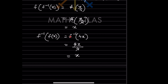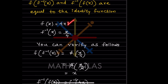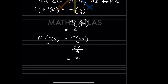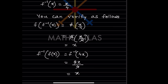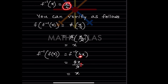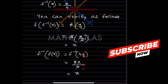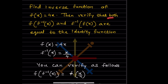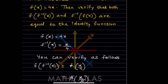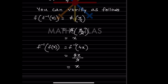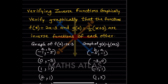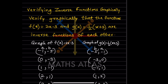Now for f⁻¹(f(x)): f(x) = 4x, so substitute 4x into f⁻¹(x) = x/4. We get (4x)/4, and the 4s cancel, giving x. Both compositions equal x, so both f(f⁻¹(x)) and f⁻¹(f(x)) equal the identity function, confirming they are inverses.